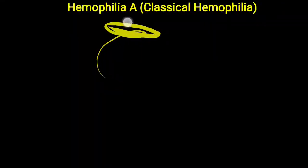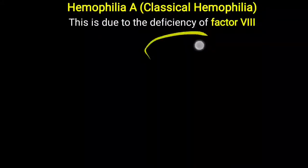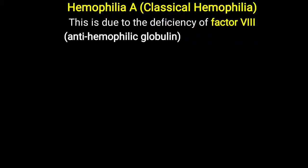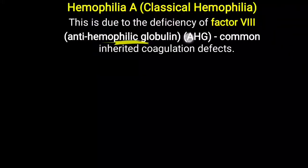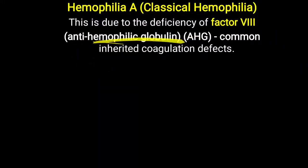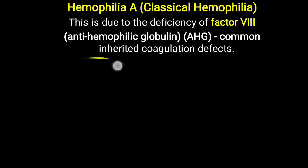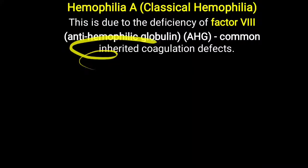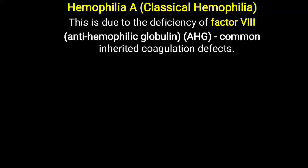Haemophilia A is called classical haemophilia and it occurs due to the deficiency of factor VIII. Factor VIII is called anti-haemophilic globulin (AHG). One important point to remember is that AHG is the largest protein in the plasma, so an MCQ can be asked about which protein is the largest in plasma — the answer is AHG, that is factor VIII.